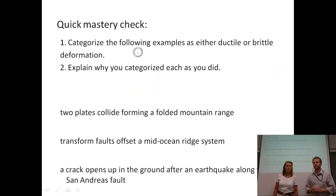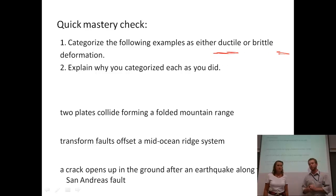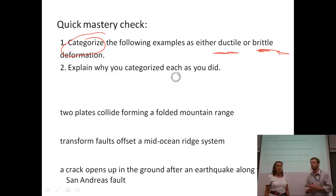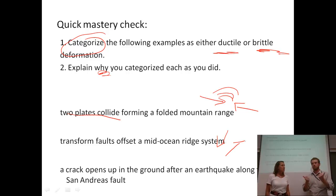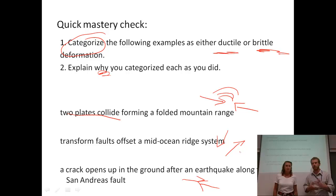Let's take a look at the mastery check. You're going to categorize the following examples as either ductile or brittle deformation, and then explain why. The three examples are: two plates that are colliding in a convergent situation to form a folded mountain range — is that ductile or brittle deformation and why? A transform fault that's offsetting a mid-ocean ridge segment — is that brittle or ductile deformation and why? And a crack that opens up in the ground after an earthquake along the San Andreas Fault — what type of deformation is that and why? Good luck, guys. You should do pretty well because you have two awesome teachers. Have a good night, and we'll see you in class tomorrow — be ready to discuss that mastery check. Thanks, Mr. Baldwin. Thanks, Ms. Awad. Bye!